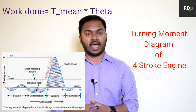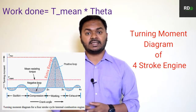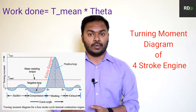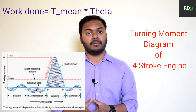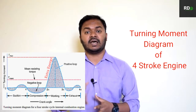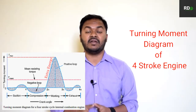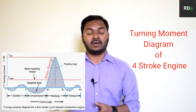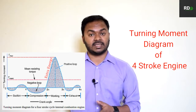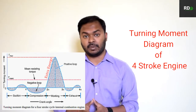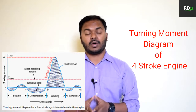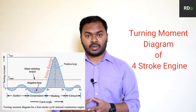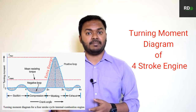You can see some negative or downside loops in the suction and compression strokes — these represent the energy or work taken from the engine. But in the power or expansion stroke, that third stroke, you can see a big positive loop, which represents the energy produced by the engine.